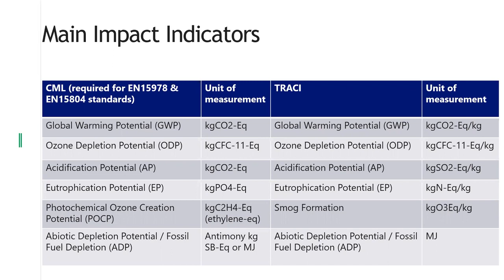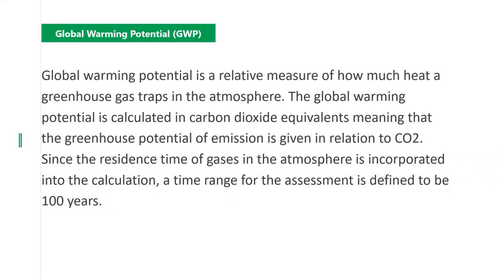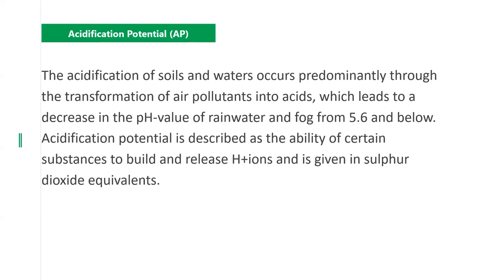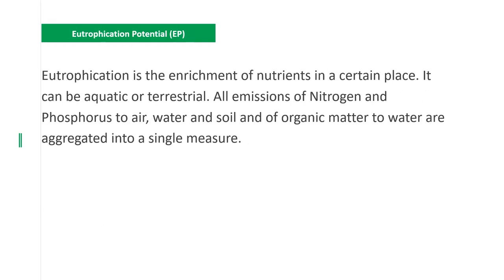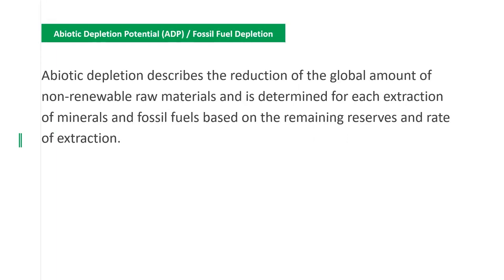This is a good example of why if we have an EPD of a concrete product calculated according to CML, we just cannot use it in North America because we have to calculate it in a different way. And if we have a product from the US recorded only according to TRACI, we cannot use it in Europe. What are we actually measuring with these indicators? Global warming potential is something pretty much everybody knows. Ozone depletion potential is the depletion of ozone. Acidification is the acidification of soil and water due to pollutants which turn it into acids. Eutrophication is the enrichment of nutrients — usually aquatic or terrestrial. Then we have the photochemical ozone creation potential and the abiotic depletion potential — the depletion of fossil fuels.